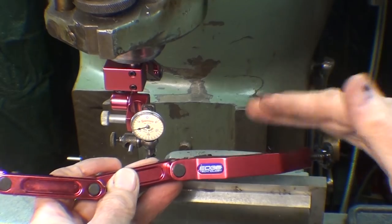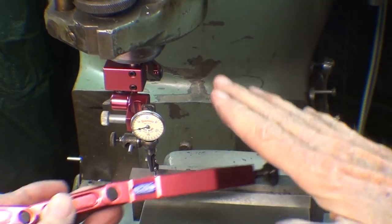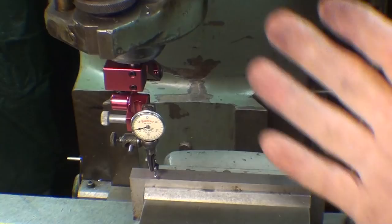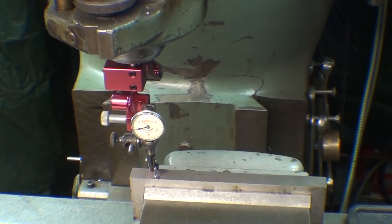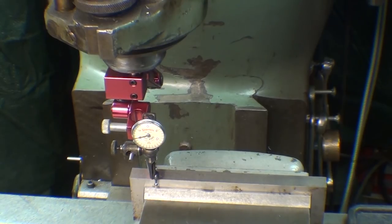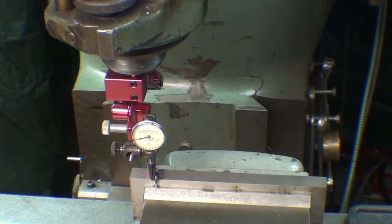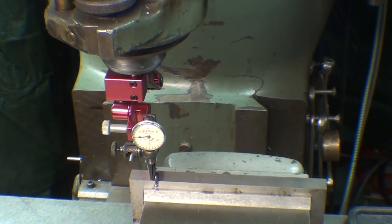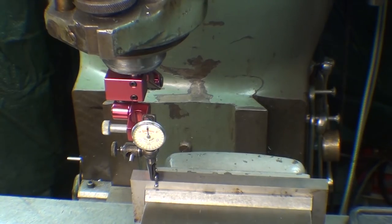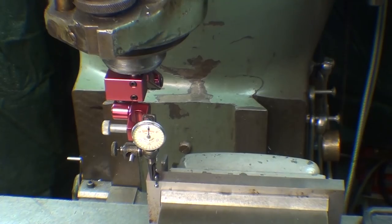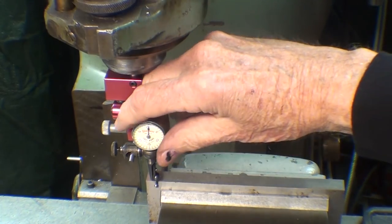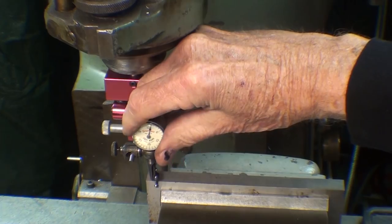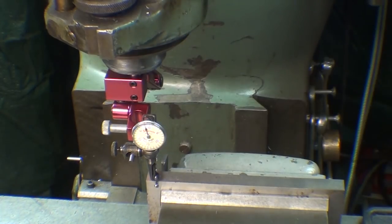The advantage of using this type of indicator holder is that your table may be dropped way down and you don't want to raise the table up so you've got the reach with this. So, bringing the quill down or raising the table, whatever you want to do, I will bring the indicator tip up against that parallel which is just snugged up in the vise until I have it on zero and then just run it from one end to the other and we'll see how far off we are, if at all.